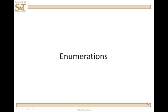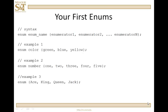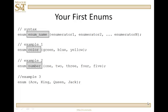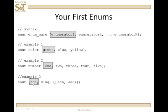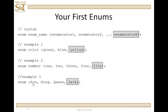Let's take a look at enumerations. Enumerations are C++ ways of setting up a set of integer constants. The syntax is pretty simple. We have the keyword enum, the enumeration name — which is actually optional, as we see in the third example where we don't have a name — and then the enumerators. You can have as many enumerators as you desire.